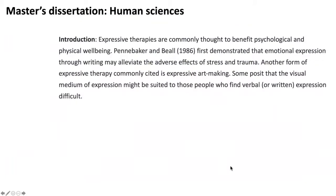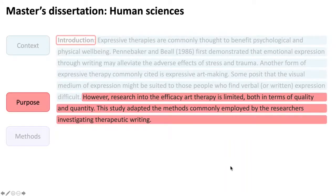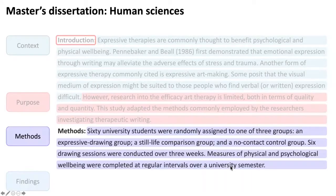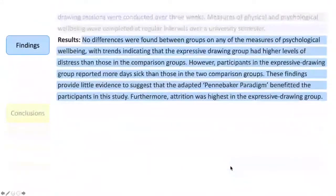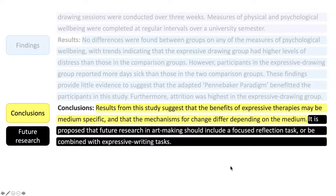This master's dissertation abstract is organized around the headings. There is context, purpose, and methods, which outlines the sample size, sampling method, test groupings, and the frequency of tests and measures. Findings are summarized, and the conclusions include a proposal for future research.